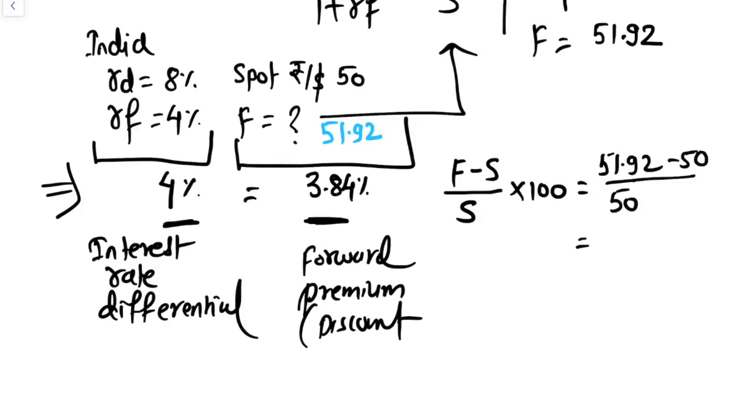So you can see 4% and 3.84% are very close to each other. That's why we are saying approximately, not exactly, but approximately equal. This is what the meaning is.